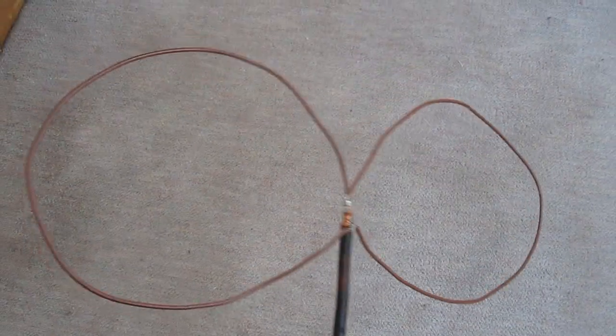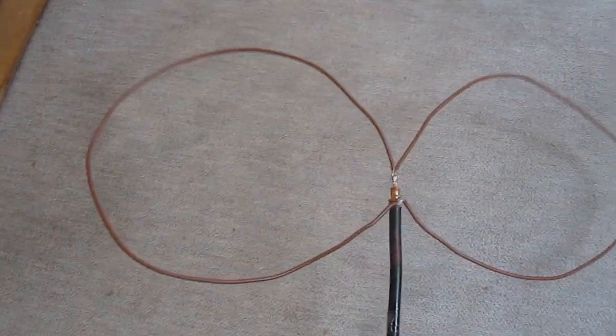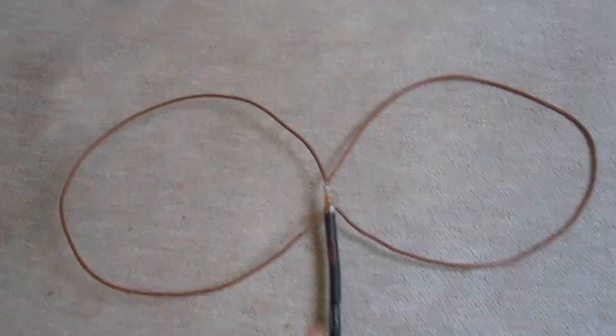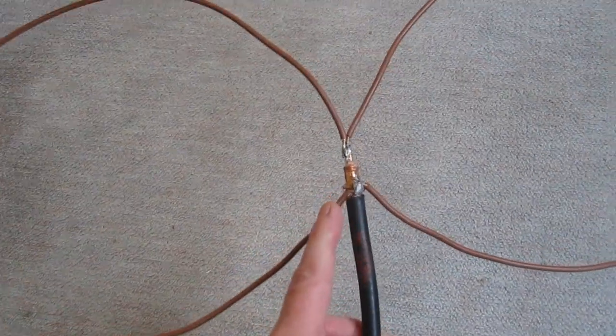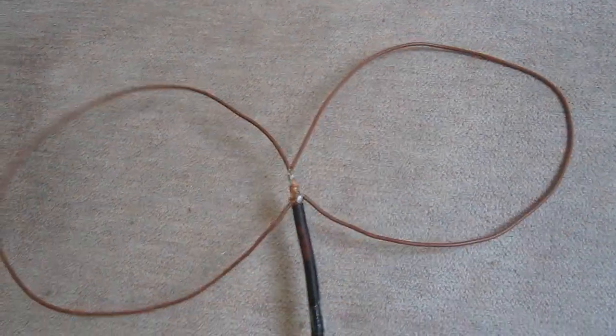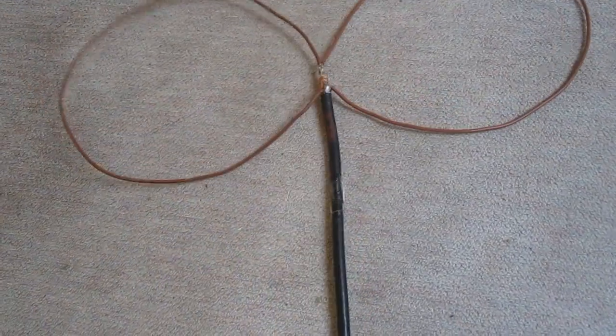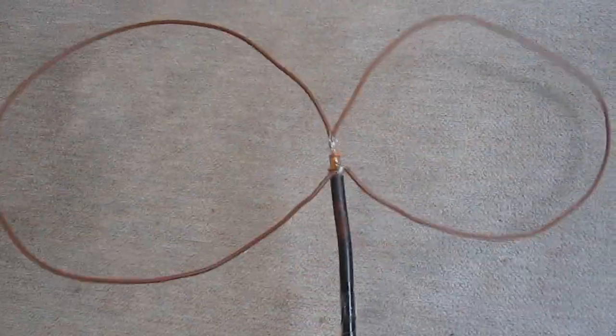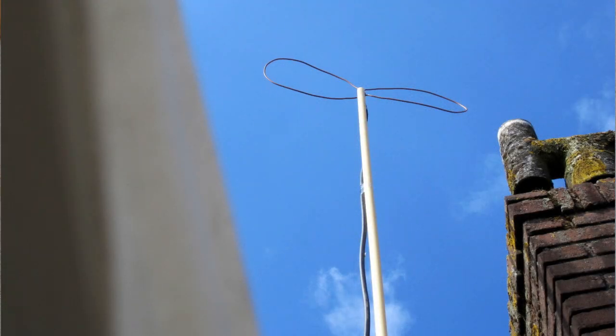Here I did the same for the 70 centimeter band, vertically polarized, directly connected to the coax cable. When the coax cable is fastened with some tape to a broomstick, I could stick it out of the window.